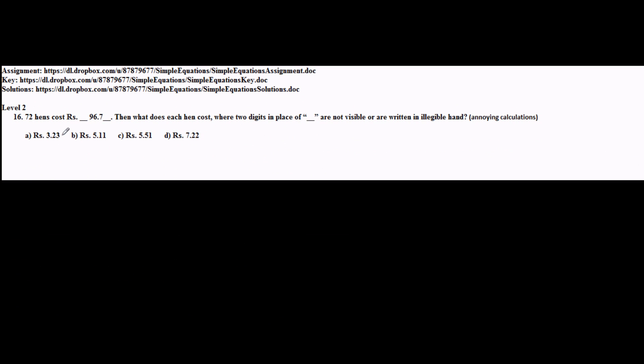Let's move to the second question. They say that 72 hens cost rupees dash 96.7 dash. Then what does each hen cost, where two digits in place of dash are not visible or written in illegible hand? So now these two digits can be anything - it could be 196.7 something, 296.78, 396.74, anything like that.